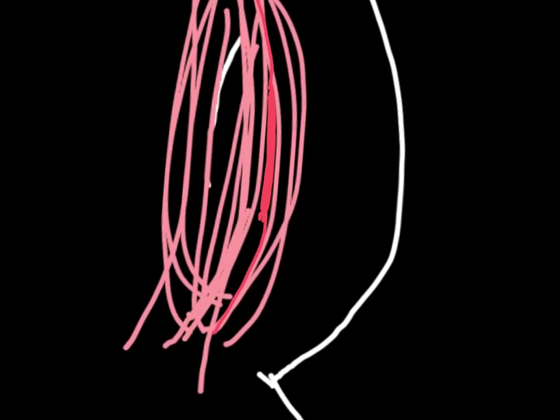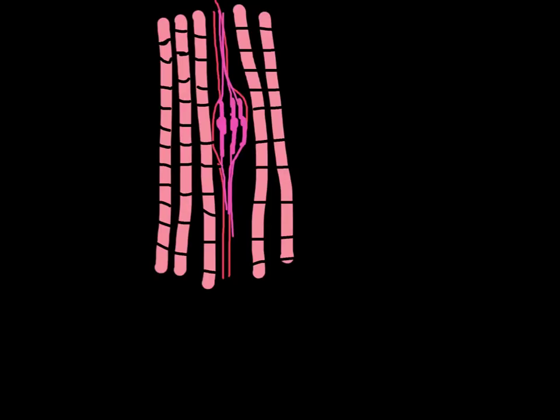If we rotate this and zoom in a little bit more, here we get a better view of the muscle spindle. This is the muscle spindle depicted in the middle of some normal muscle fibers, the normal contracting muscle fibers of the biceps. In this muscle spindle are intrafusal fibers. These are depicted in a pinkish color here. It's kind of a spindle shape, that's why it's called a muscle spindle.